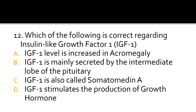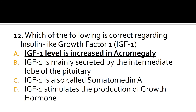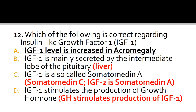The correct answer is A: IGF-1 level is increased in acromegaly. B is false because IGF-1 is mainly secreted by the liver. C is false because IGF-1 is also called somatomedin C — it is IGF-2 that is called somatomedin A. D is false because it is the other way around: growth hormone stimulates the production of IGF-1.